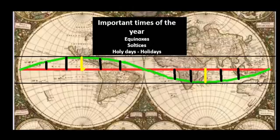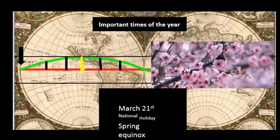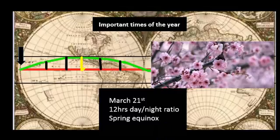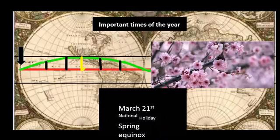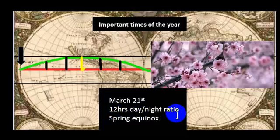Let's jump right in and talk about important times of the year. You have equinoxes, solstices, and holy days or holidays. March 21st is related to the Japanese holy day, the blossom season or what they call the sakura season. Another thing is March 21st is when the spring equinox occurs, and you get 12 hours of daylight and 12 hours of night, a 12-hour day-night ratio.